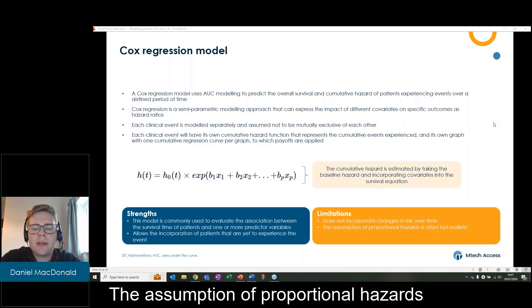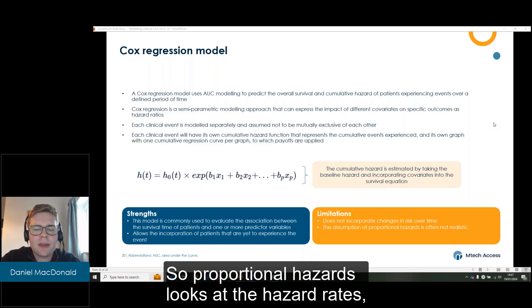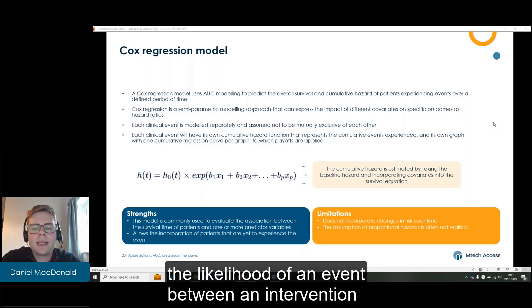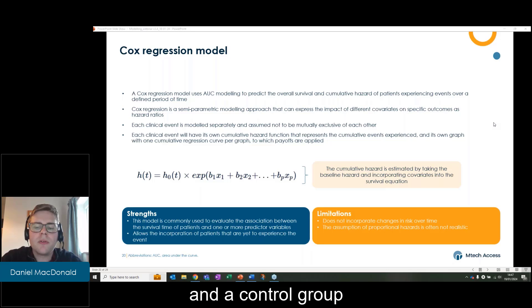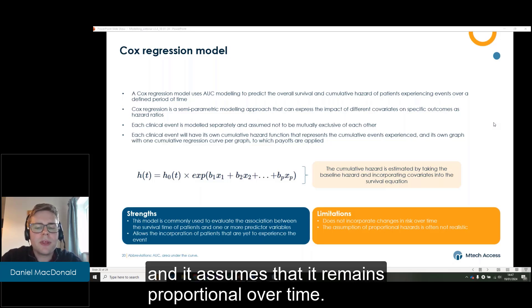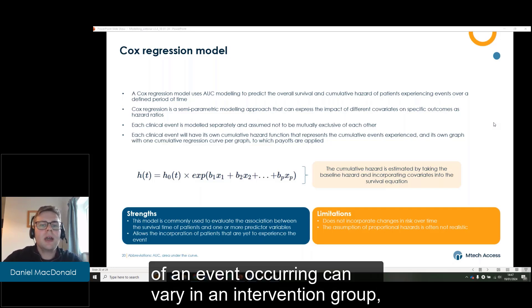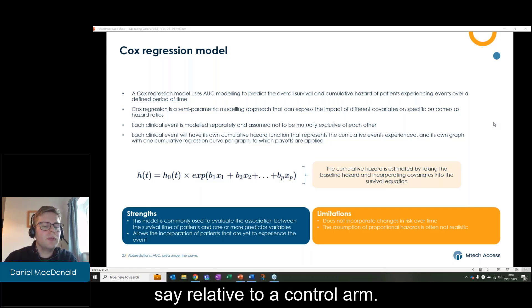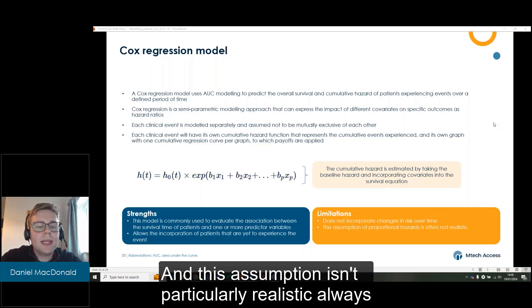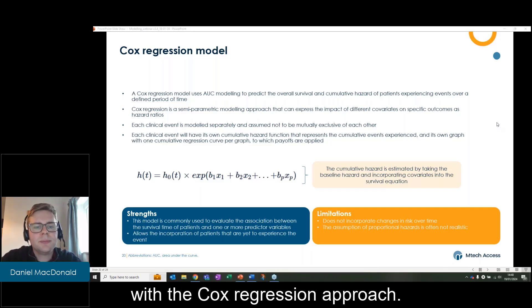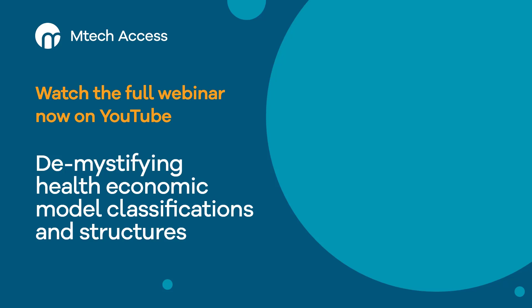The assumption of proportional hazards is often not realistic. Proportional hazards looks at the hazard rates, the likelihood of an event between an intervention and a control group, and it assumes that it remains proportional over time. Often the hazard rates of the likelihood of an event occurring can vary in an intervention group relative to a control arm, and this assumption isn't particularly realistic always with the Cox regression approach.